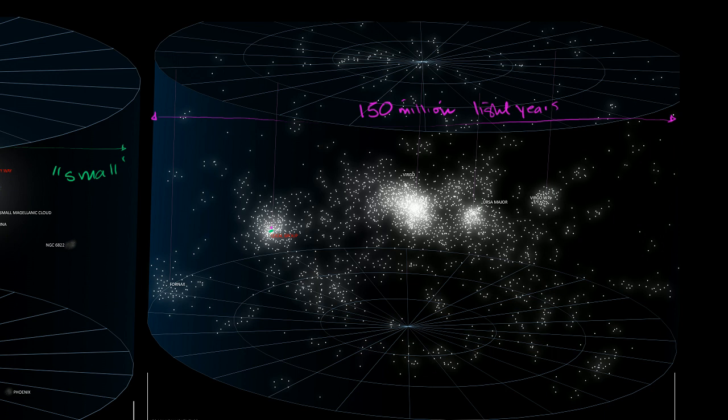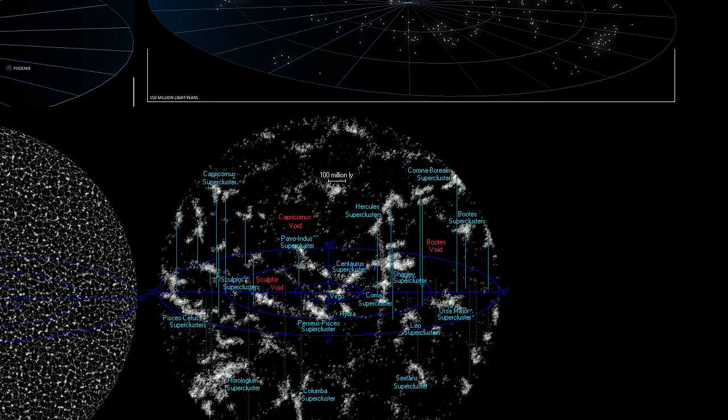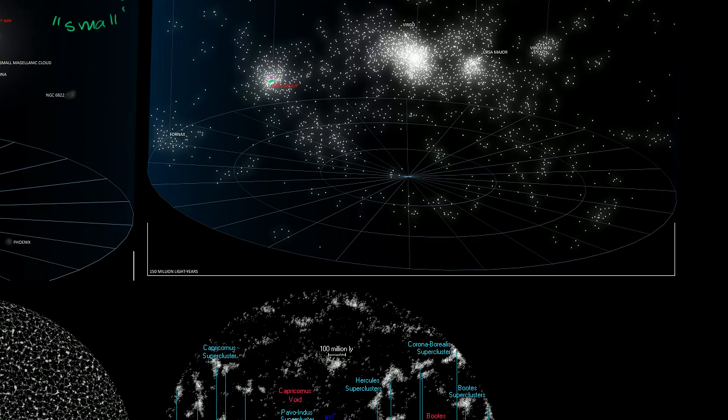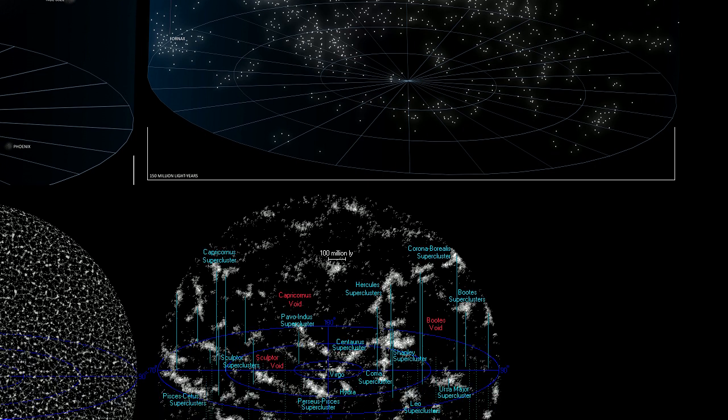We can zoom out even more. So you had your Virgo supercluster, 150 million light years was that last diagram. This diagram right here, 150 million light years across, would fit right about here on this diagram. So this is all of the superclusters that are near us. And once again, near has to be used very, very loosely. A billion light years is about from here to there. So we're starting to talk on fairly massive, I guess we've always been talking on a massive scale. But now it's an even more massive scale. But we're still not done.